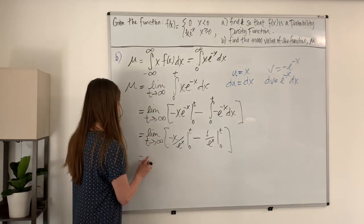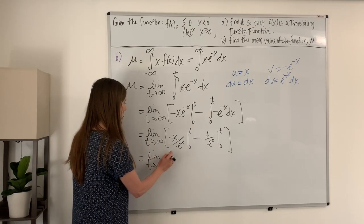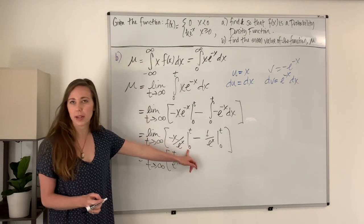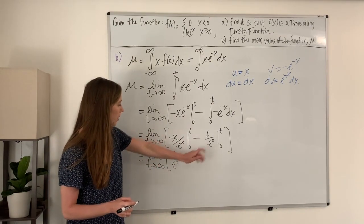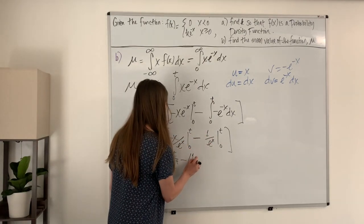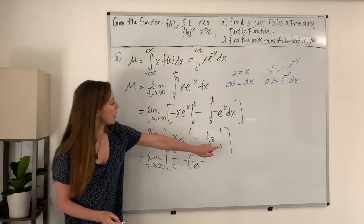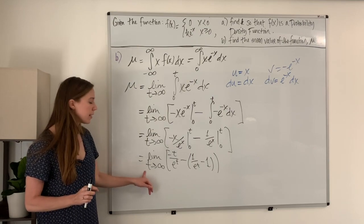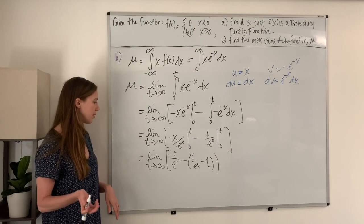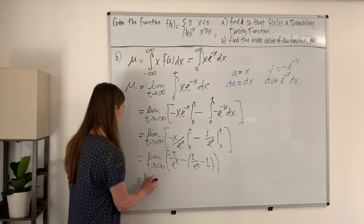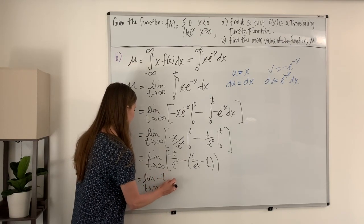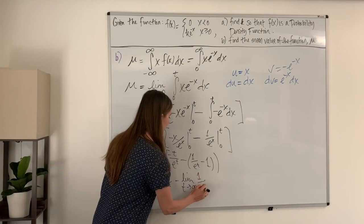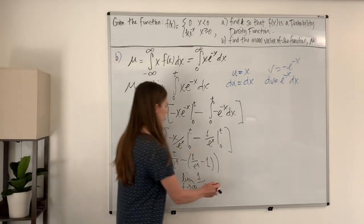Now I evaluate both of these. We get the limit as t approaches infinity of: negative t over e to the t — and plugging in zero gives zero, so that term drops — minus one over e to the t, and plugging in zero gives one over one, so that's minus one. Using limit laws to split into three separate limits: the limit as t approaches infinity of negative t over e to the t, minus the limit as t approaches infinity of one over e to the t, plus one.